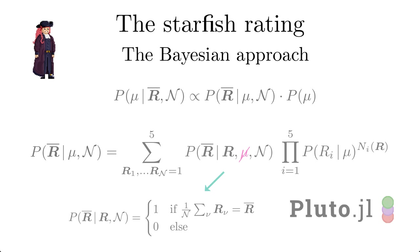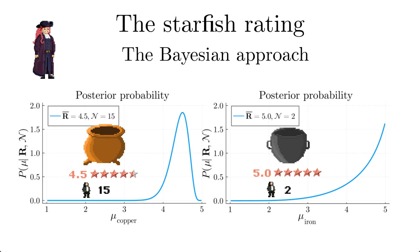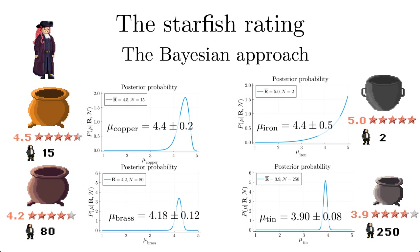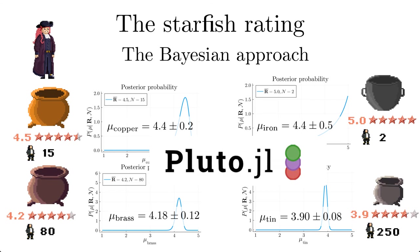The figures show the results for the copper pot and the iron vessel. We see that the distribution of iron is much broader as it is based only on two votes. For this result we have used an uninformative uniform prior. We can characterize the results by mean plus minus standard deviation and obtain. This qualifies the observation of the previous statistical experiment that the voting of the iron vessel is not very reliable and the iron vessel is not really more popular than the tin pot. You will find a Pluto notebook with all the details and you can experiment how the rating probability distribution depends on the mean rating and the number of votes.